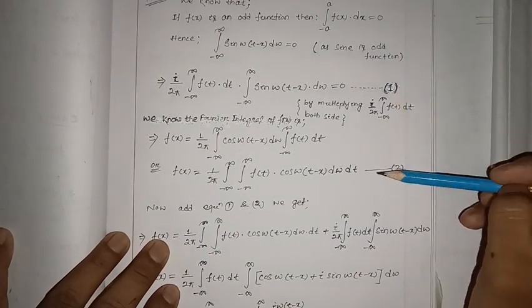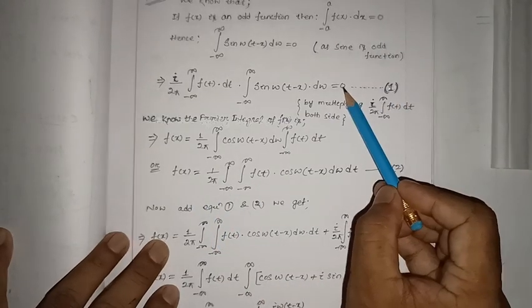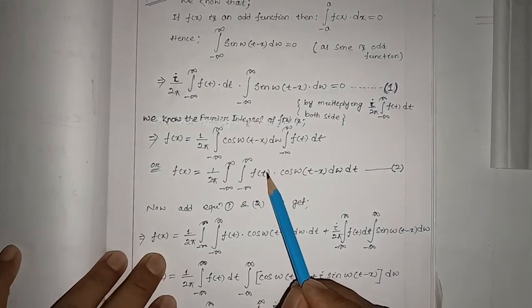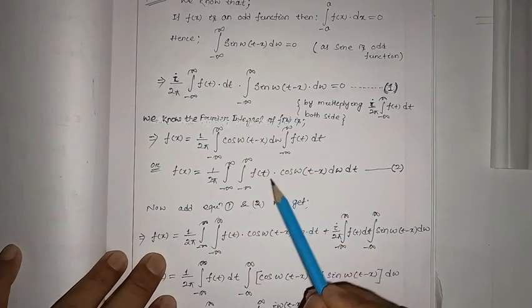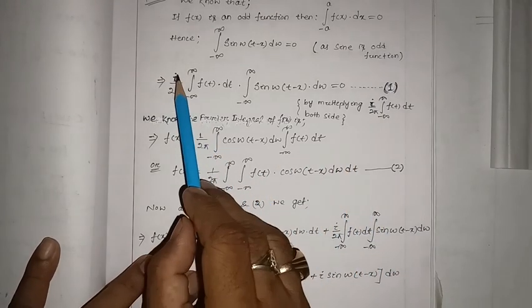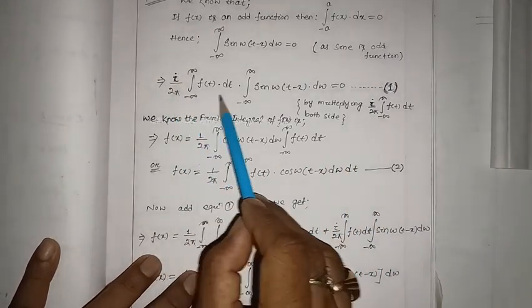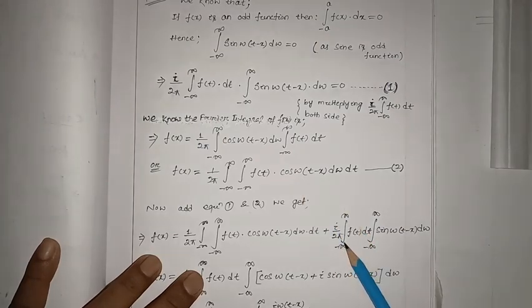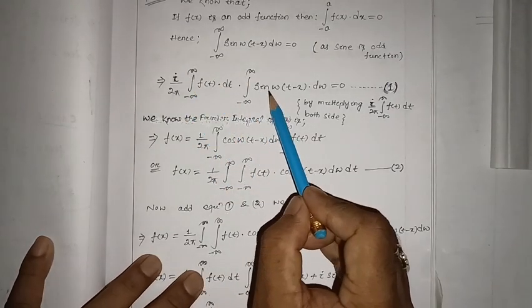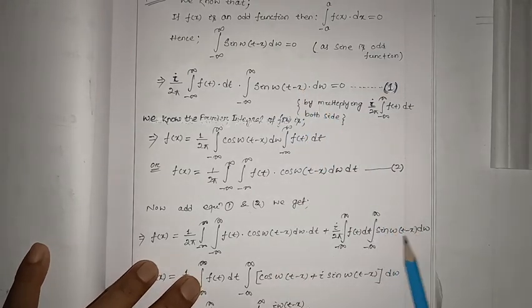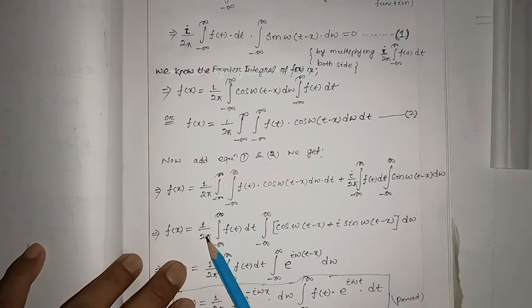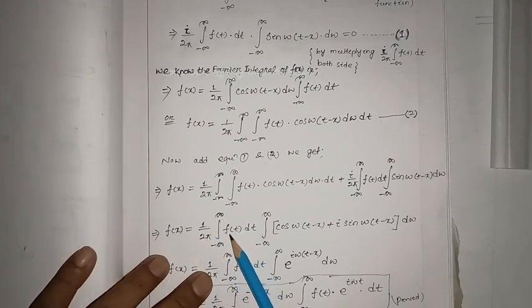Now we add equations one and two. f(x) plus zero equals f(x) on the left-hand side. On the right-hand side, adding the corresponding terms gives us one by two pi, double integral of f(t) dt, times the terms from both equations involving cos(ωt - x) and sin(ωt - x).